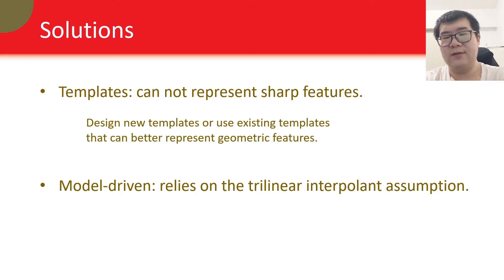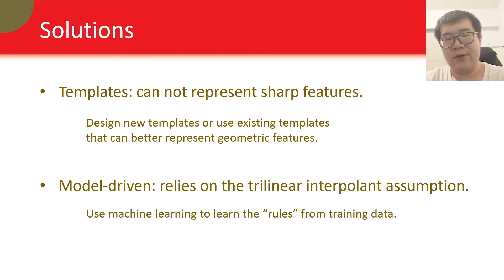For the first one, we can either design new templates or use existing templates that can better represent geometric features. The second one is harder to solve. Suppose we have those better templates. How do we define the rules to decide what is the topology inside the cube, and where to put the vertices? The answer is we don't. We will let the algorithm learn those rules by itself, with the help of machine learning and a lot of training data.